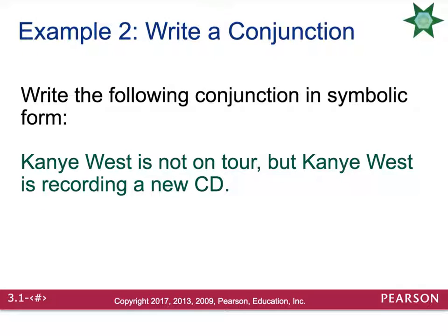Let's write the following conjunction in symbolic form: 'Kanye West is not on tour, but Kanye West is recording a new CD.' Notice the word 'not' — that uses the negation symbol. Let's call 'Kanye West is on tour' T. Since he is not on tour, we negate it: ~T.